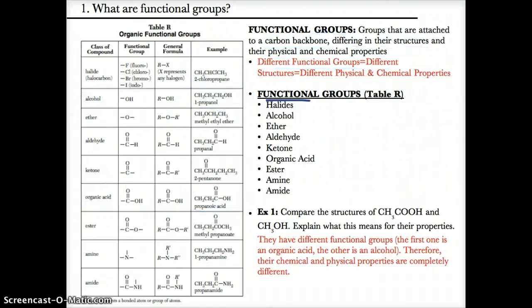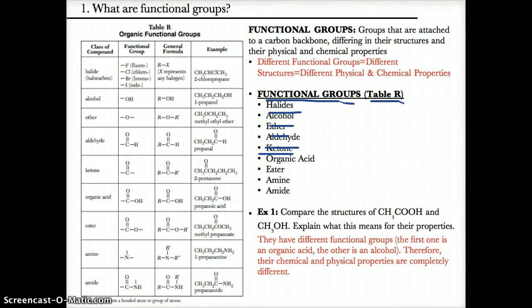In terms of functional groups, these are all listed on table R. Make sure you look at table R to understand these functional groups. The groups are: halides, alcohols, ethers, aldehydes, ketones, organic acids, esters, amines, and amides.